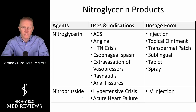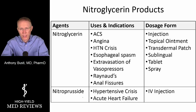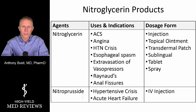Nitroprusside, on the other hand, is predominantly reserved for more acute settings involving hypertensive crisis. A classic indication is aortic dissection, or in patients with hypertensive heart failure who have flash pulmonary edema, where we need to offload pulmonary vascular congestion and encourage forward flow. It is only available and given parenterally.